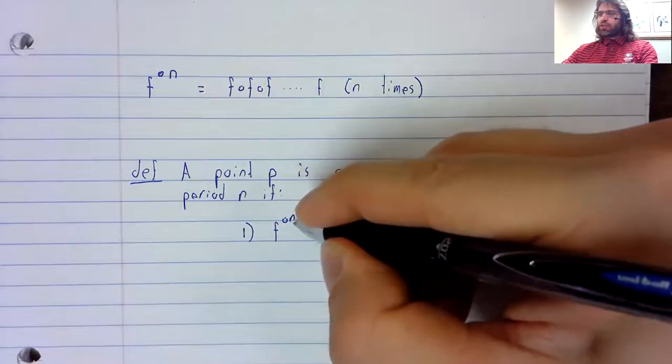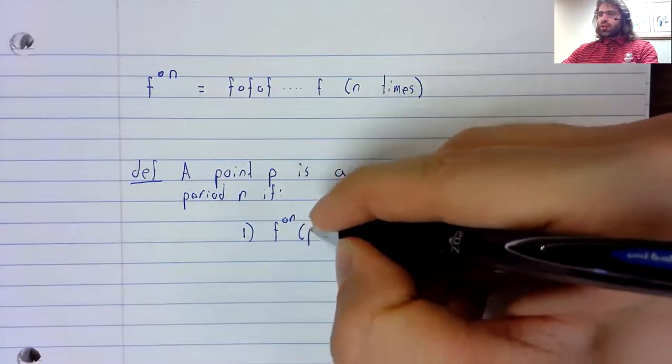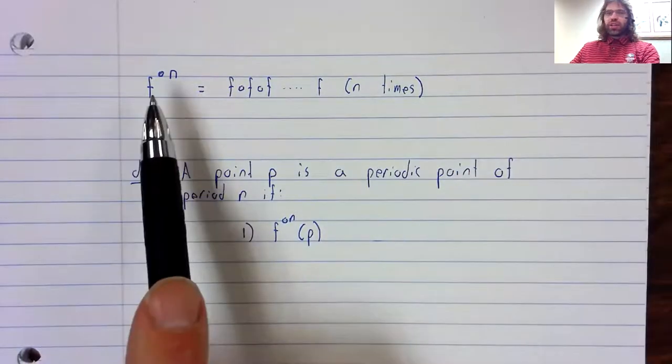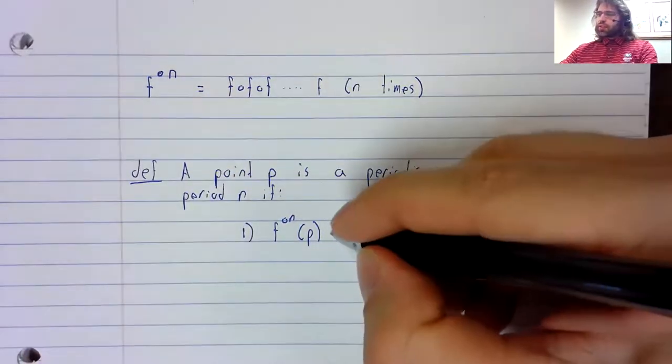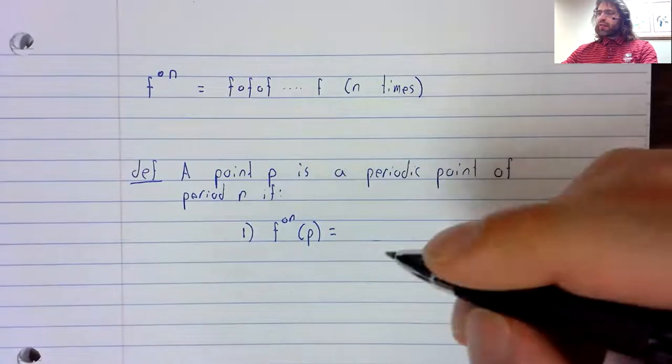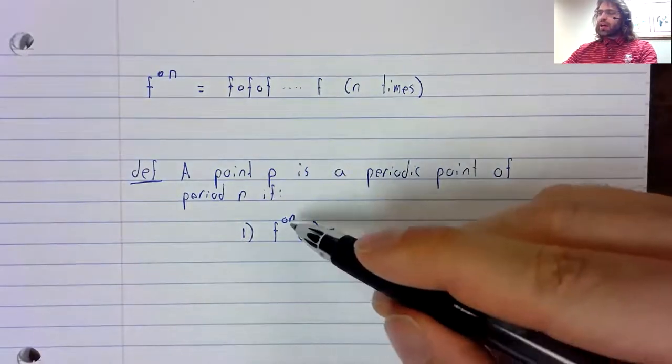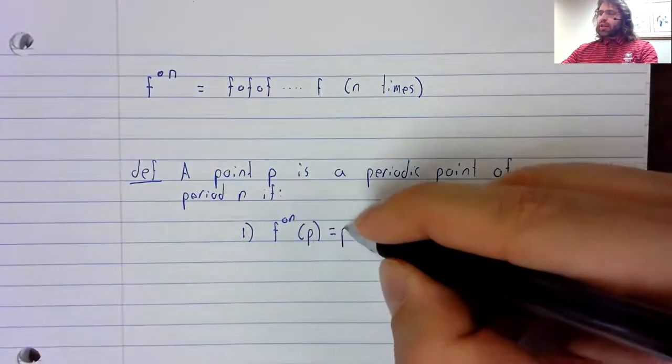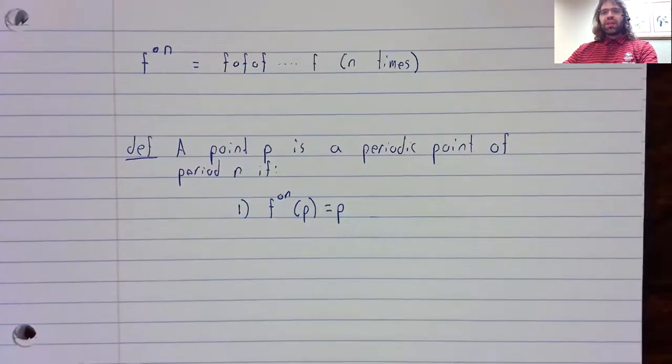it's a fixed point of this composition. So if we compose F n times and we apply it to P, we get P.